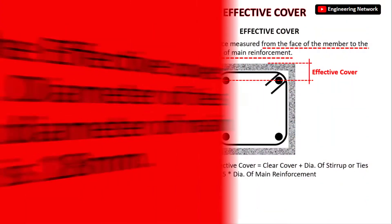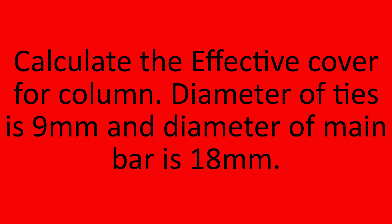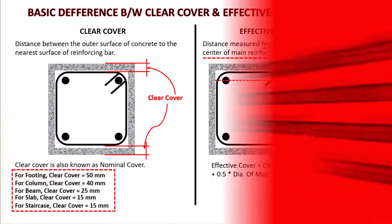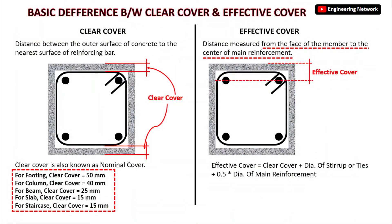Let me give you a homework. Calculate the effective cover for a column. The diameter of ties used in the column is 9 mm, and the diameter of the main bar is 18 mm. Please share your results with me in the comment box. This is the basic difference between clear cover and effective cover.